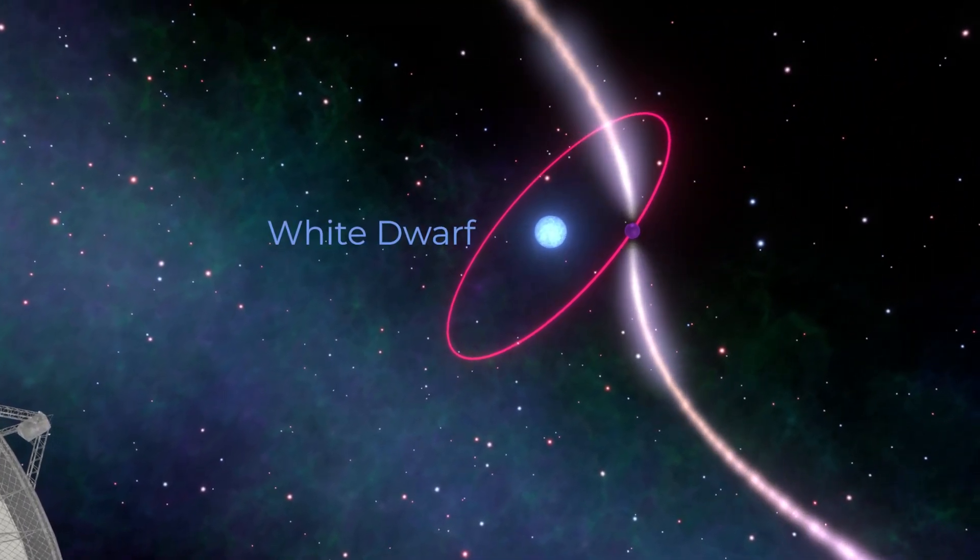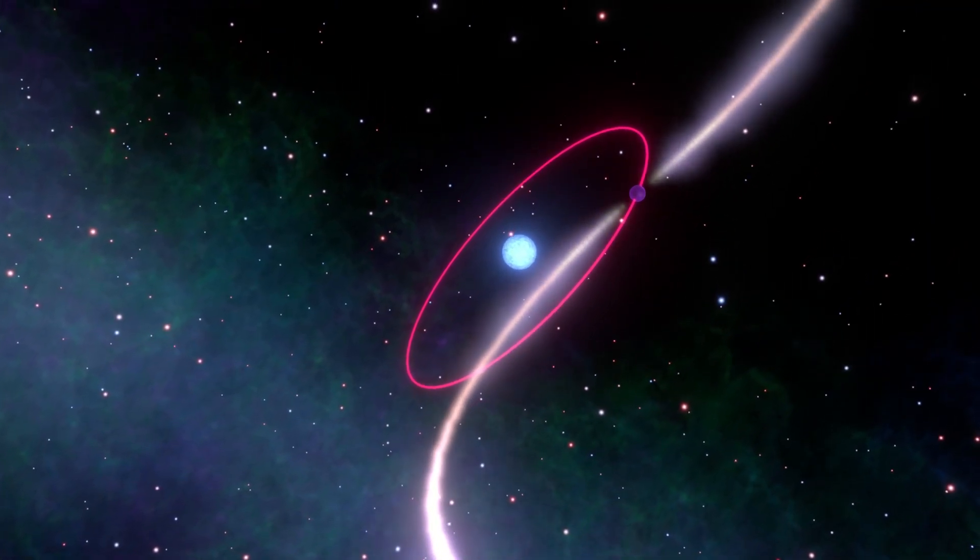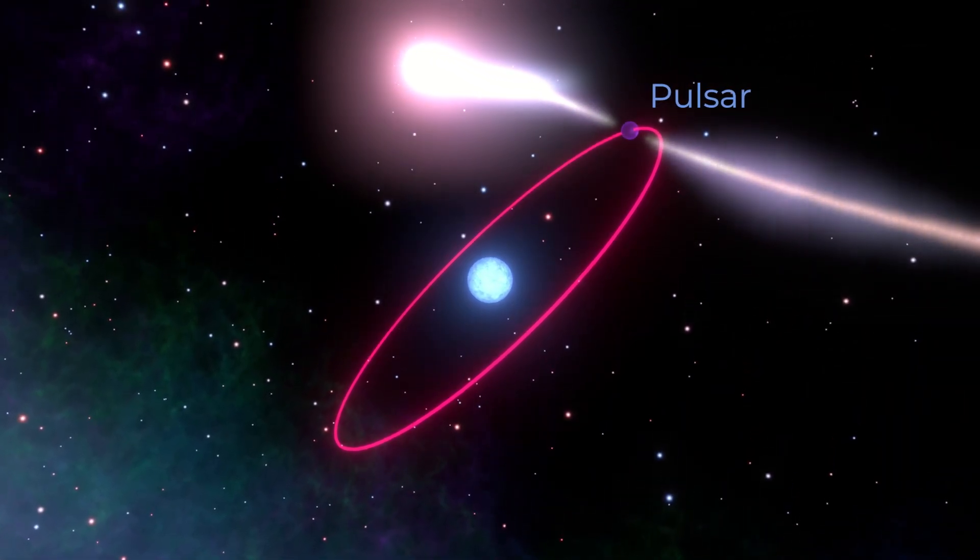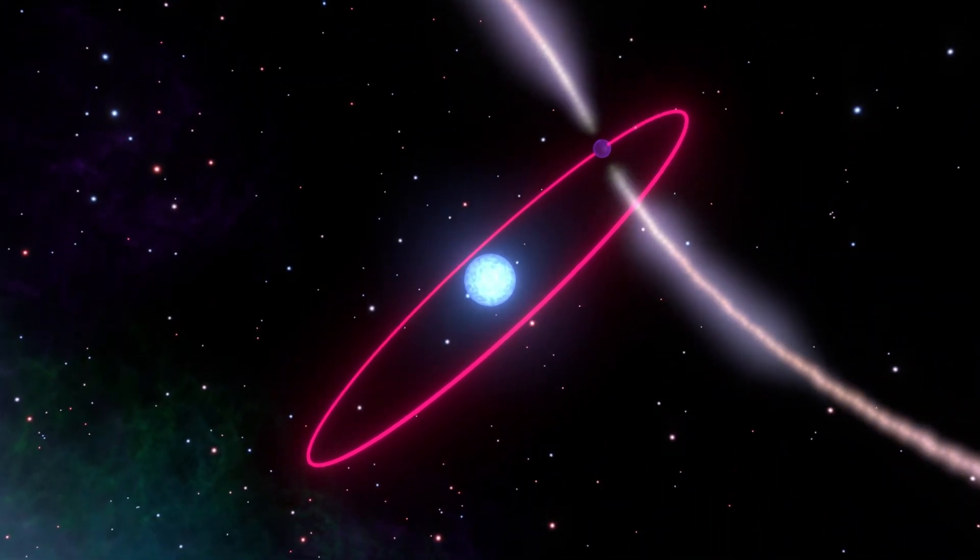The system comprised of a white dwarf, a few hundred thousand times the mass and density of the Earth, and an exotic neutron star in the form of a pulsar, locked in a tight five-hour orbit.